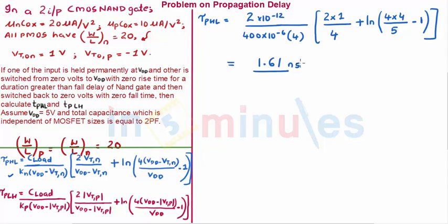And wherever there is V_TN or threshold voltage of NMOS, it will be written by mod of threshold voltage of PMOS. And that's exactly the variation. So let's quickly do propagation delay low to high. Again, C_load is given to us: 2 × 10^-12 upon K_P.